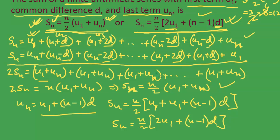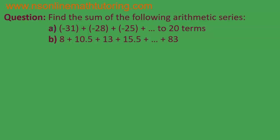Now that we know how to find the summation of the first n terms of a finite arithmetic series, we are in a position to solve questions. Let us take up the very first question of this topic: find the sum of the following arithmetic series. There are two sub-parts.